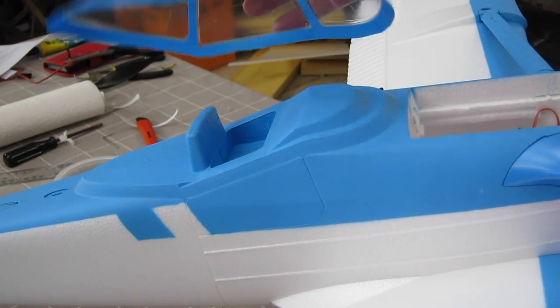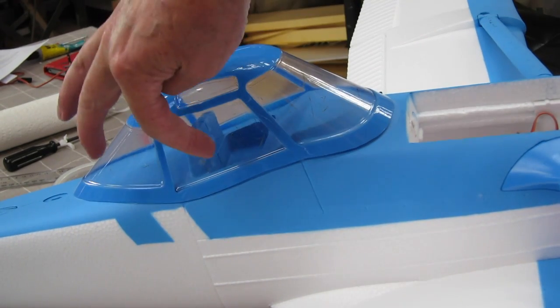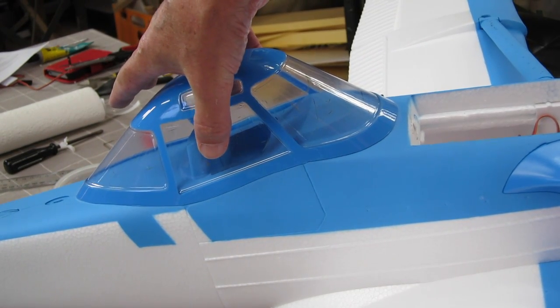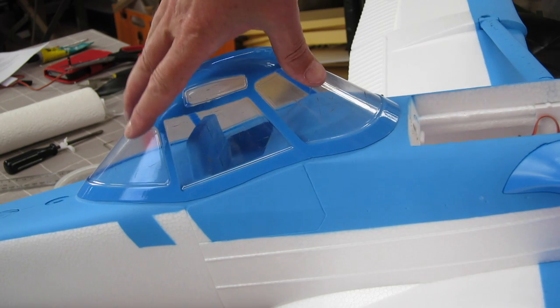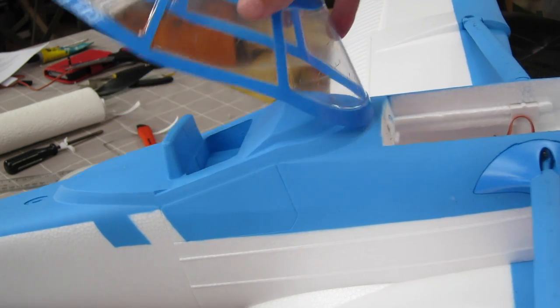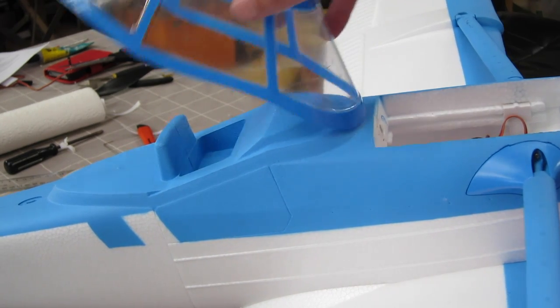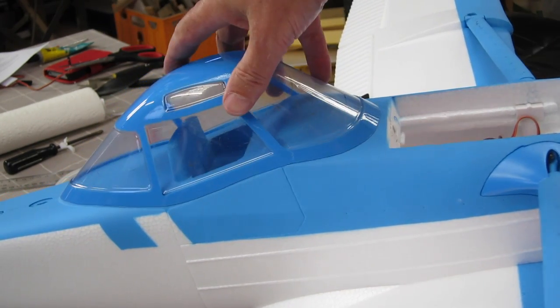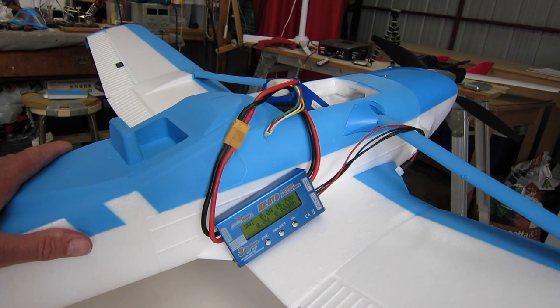I haven't glued the canopy on yet because I think this is just begging for a panning FPV camera in there. That would be a brilliant view from in there I think, doing FPV. So I'm going to maybe hinge that somehow so that I can get access in there. All right, it's time for the run-up test. I have a 4S battery plugged in.